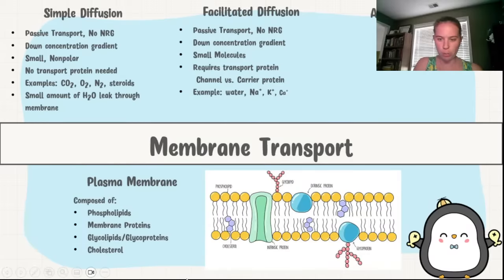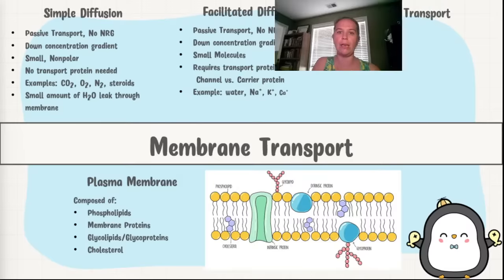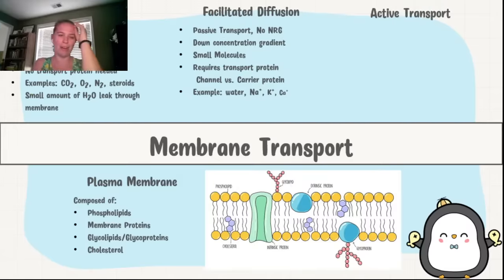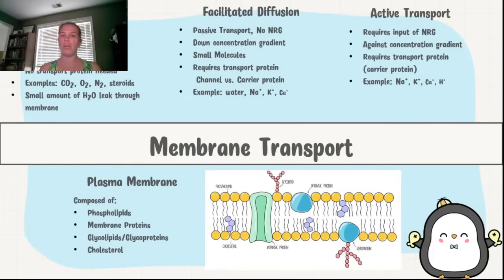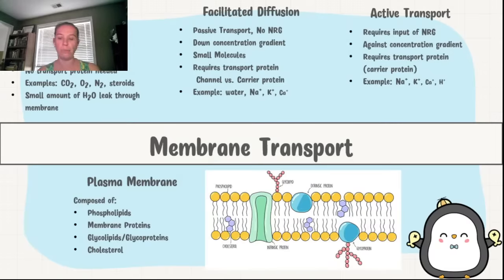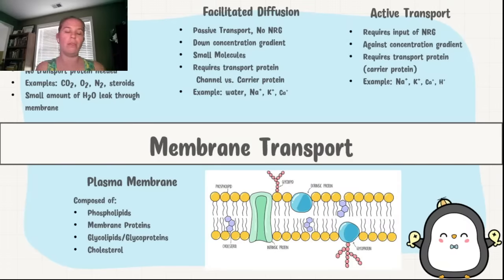Active transport requires an input of energy — we're going from the bottom of the hill and have to pedal our bike up. It requires energy and a transport protein, usually a carrier protein, and goes against the concentration gradient. We see this with charged materials like sodium, potassium, hydrogen ions, protons. These are forms of active transport — sodium-potassium pumps or proton pumps. When you see the word 'pump' in the information, that usually indicates active transport.